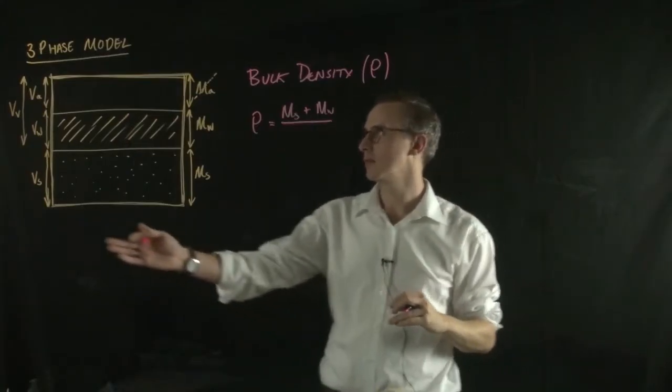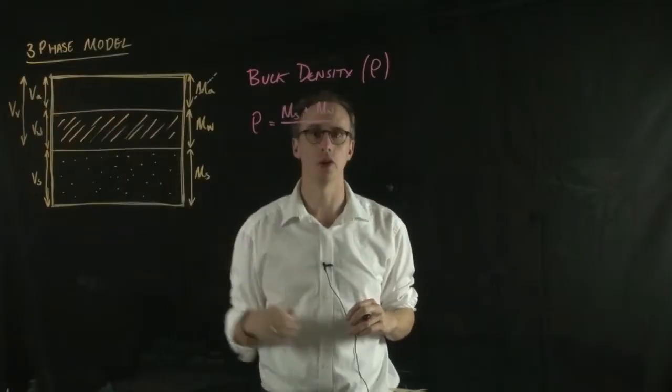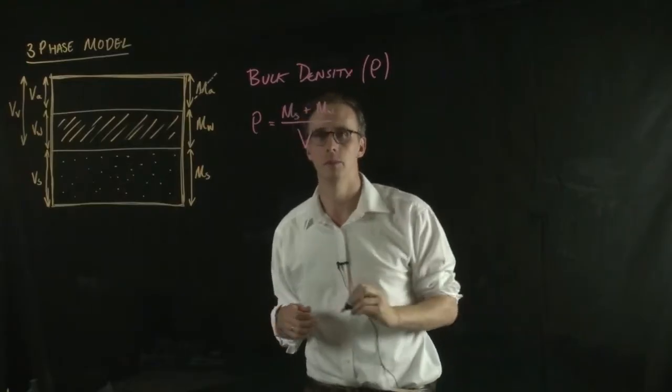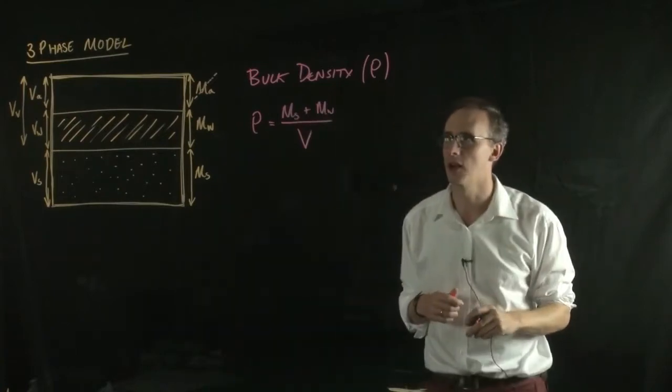So in this case we could just sum the volume of the solid, volume of water, and volume of air together. But just to simplify, we'll call that capital V, the total volume of the soil. So this is the bulk density of the material.